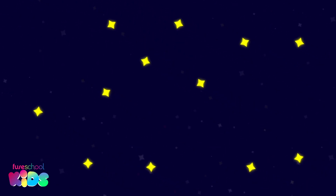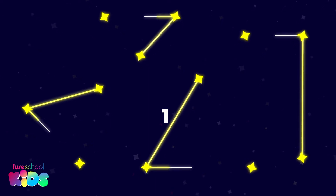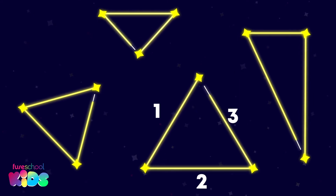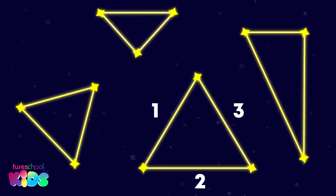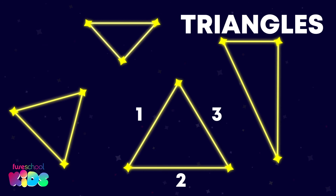I wonder what shape these stars will make. These shapes have 1, 2, 3 sides. Shapes with 3 sides are triangles.